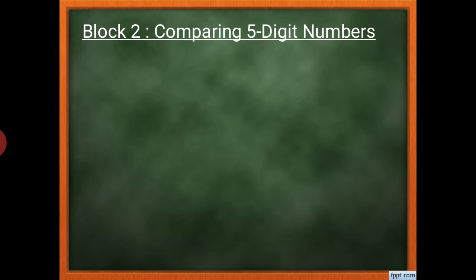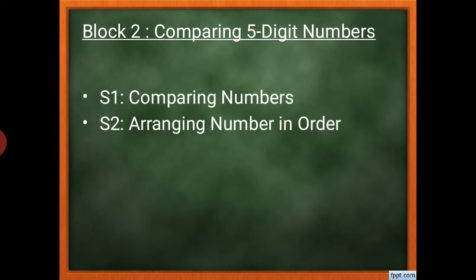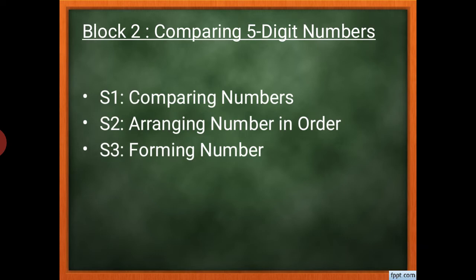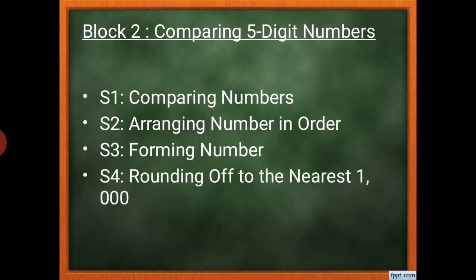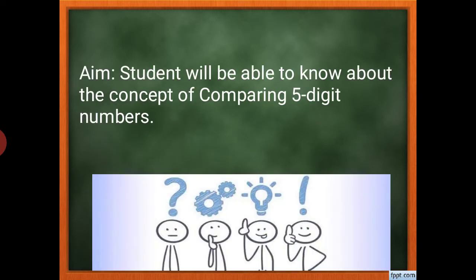In Block 2 we covered: S1 comparing numbers, S2 arranging numbers in order, S3 forming numbers, and S4 rounding off to the nearest thousand. Today's aim will be to revisit the concept of comparing five-digit numbers, so we'll be recapitulating Block 2 again.